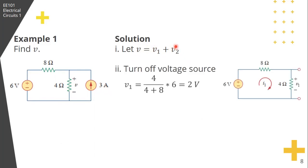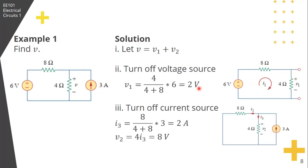To solve for V1, we set the current source to zero, so it becomes an open circuit. As you can see, we use voltage division to solve for V1, which is equal to 2 volts.